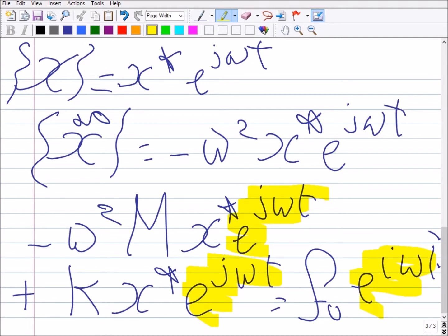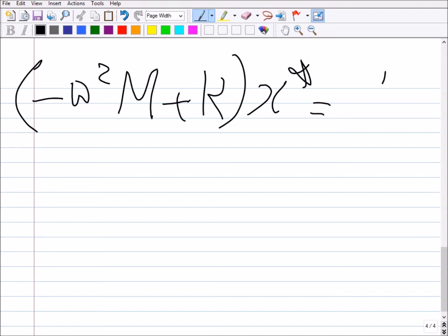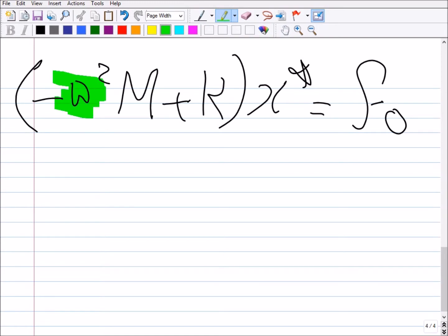What's this? You will have the relation written as -ω²M + K multiplied by the vector x* equals F₀. What happened here now? Omega, remember, this is not the natural frequency. Omega is the excitation frequency.